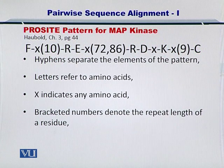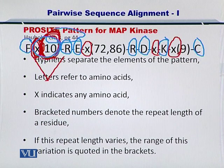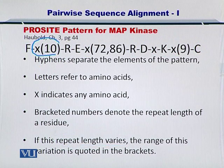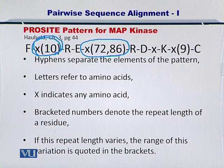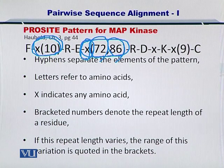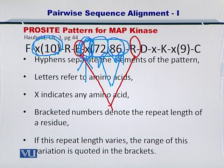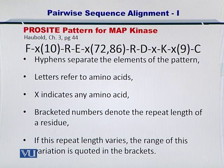There can also be a case where the repeat length varies. As we just saw, in one case the repeat length was just 10, so you could have 10 amino acids repeated. A little further down in the sequence you can see 72,86 — this means any amino acid, because there is an X, can occur between 72 to 86 times between E and R. This is how ProSight patterns are built, and they are very useful in generalizing the patterns within sequences.